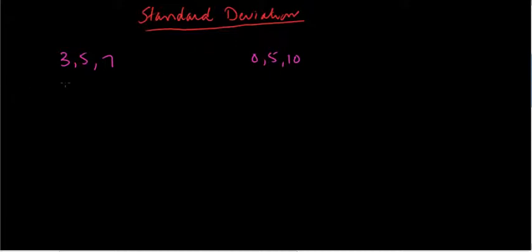In both cases the average is 5, but you can see there's some difference between these two data series which is not captured by the average. Precisely, the numbers in this first series are closer to the mean or the average.